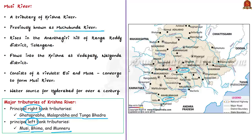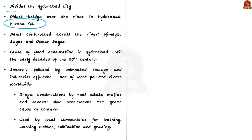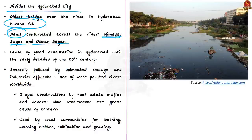Formerly known as the Muchukunda River, the Musi rises in Anandagiri Hills in Ranga Reddy district of Telangana and flows into the Krishna River at Vedapalli in Nalgonda district. It consists of two rivulets, Eesi and Musa, which converge to form the Musi River. This river has been the water source for Hyderabad for over a century, dividing the city between the old city and the new city. The Purana Pool is the oldest bridge over this river, and two dams — Himayat Sagar and Osman Sagar — are constructed on it.